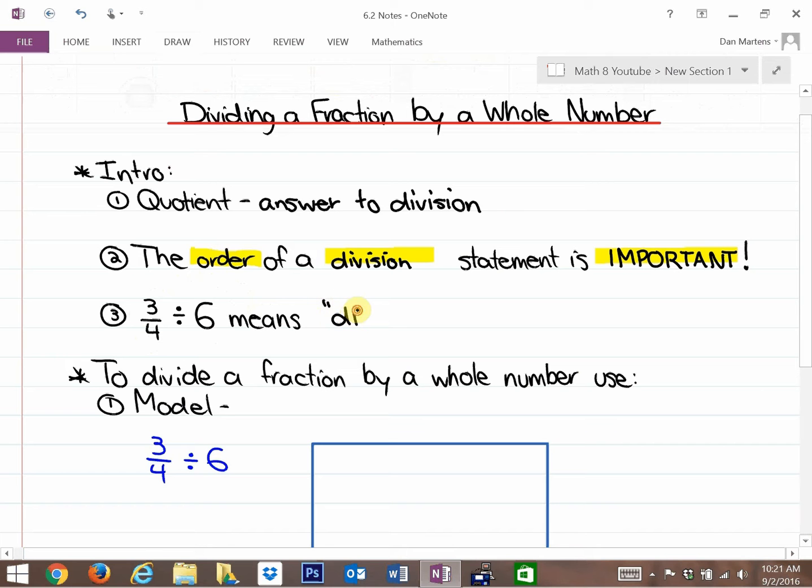What that means is we are going to divide 3/4 into 6 equal groups. That's what that actually means.